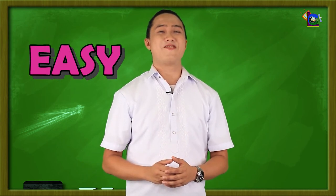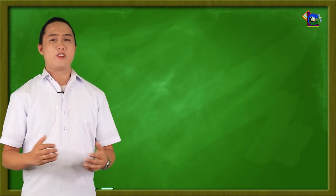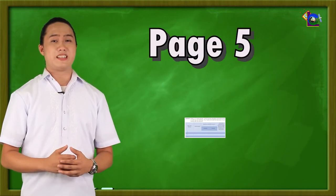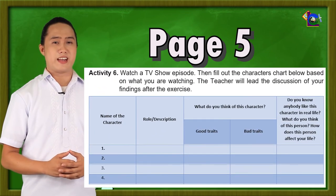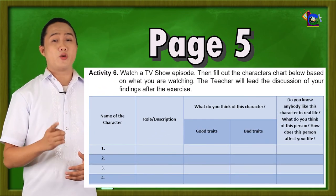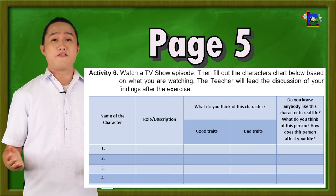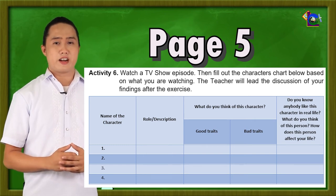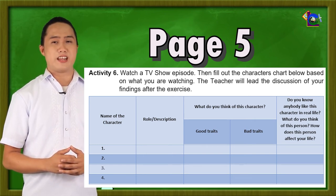Kindly open your module on page 5 and answer activity number 6 in a one-half crosswise. You will pick a TV show episode, then fill out the character's chart on the screen based on what you are watching.